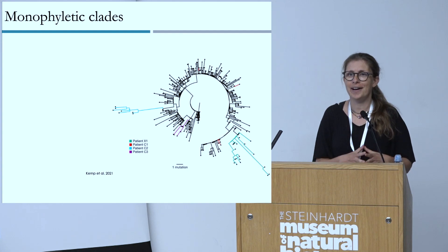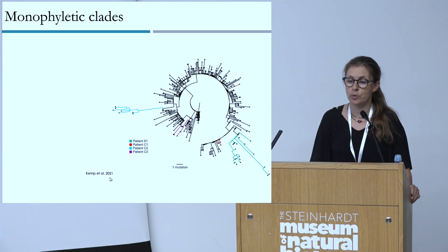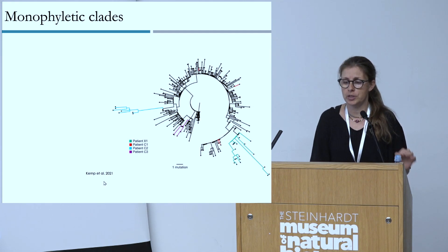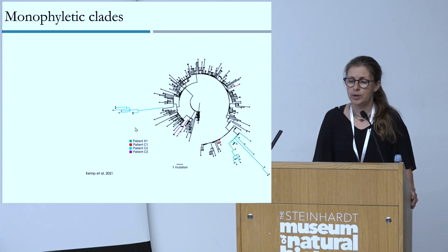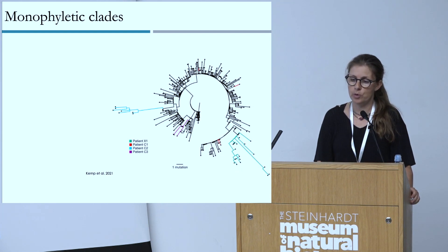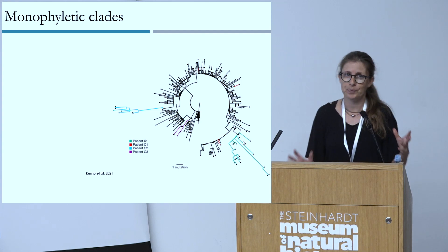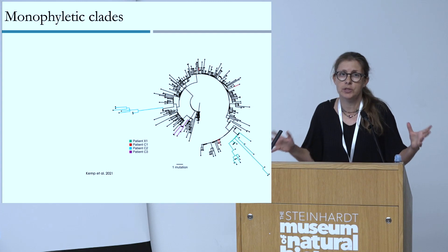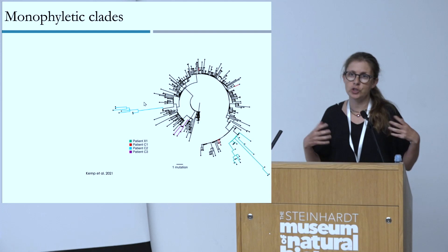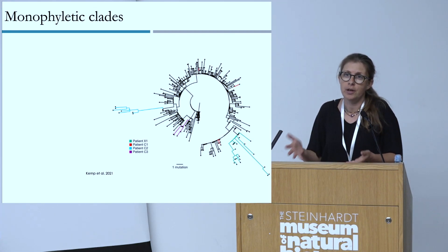Our idea was to search this data and look for what we call monophyletic clades. This is a phylogenetic tree — data from a paper by Kemp and colleagues from 2021, one of the first papers reporting chronic infections. All patients that are chronically infected are color-coded. The blue sequences are all from the same chronically infected patient, and you can see they all cluster together on the tree, separated from the rest. The same applies to the green patient and the purple patient — they all cluster together.